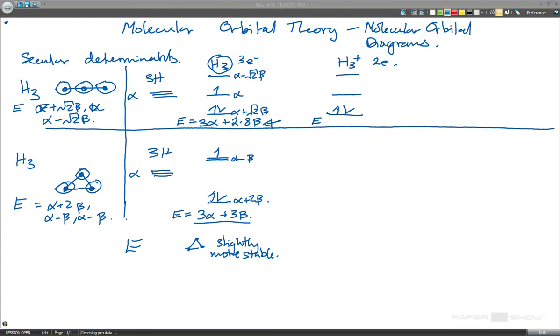So now, here, the energy is just going to be 2 alpha plus 2.8 beta. In the triangular case, that's going to be two electrons in here at the alpha plus 2 beta level. And so the energy now here is 2 alpha plus 4 beta.